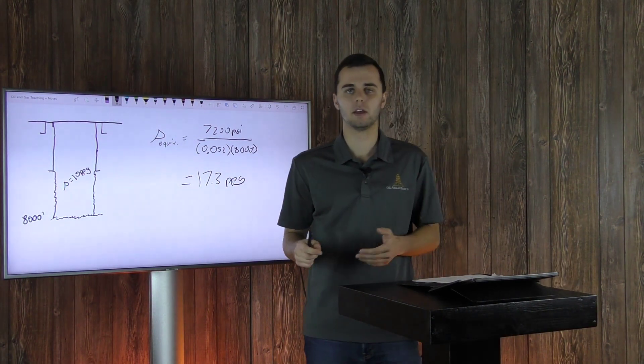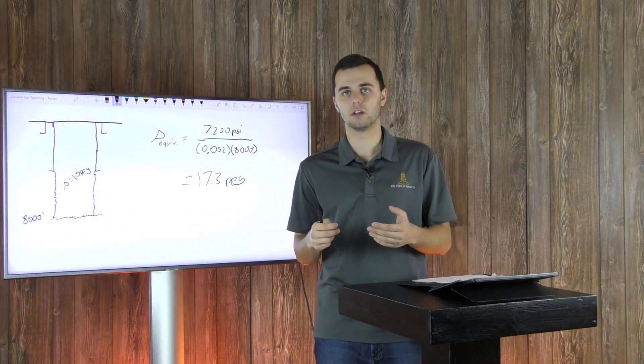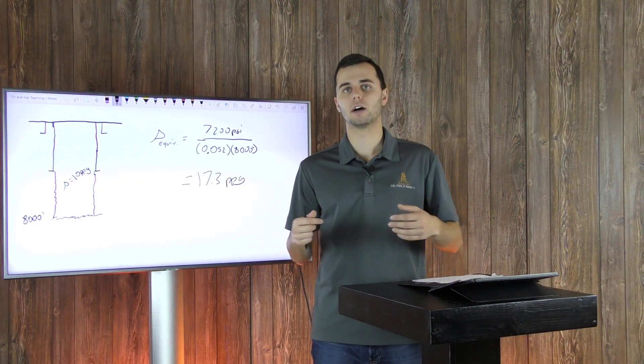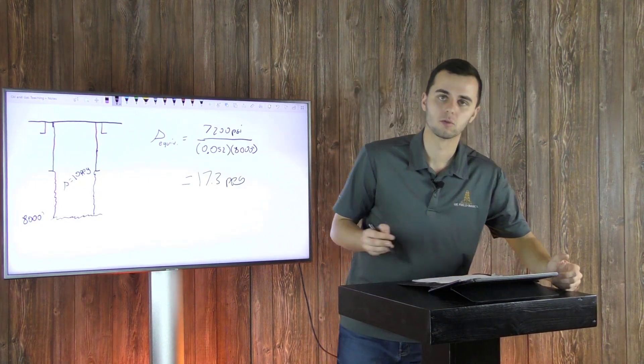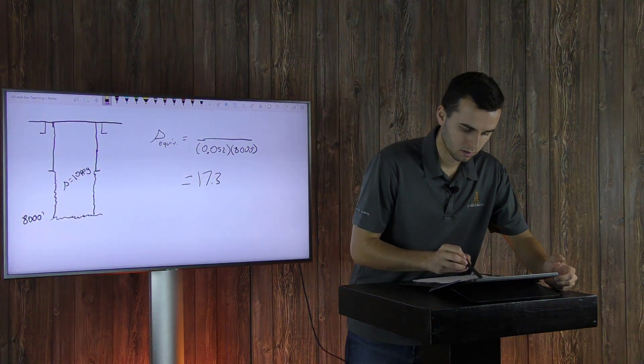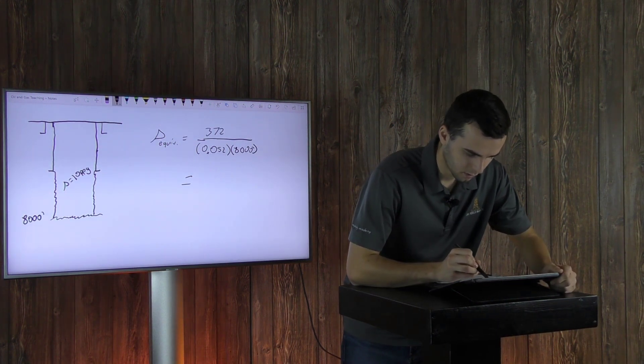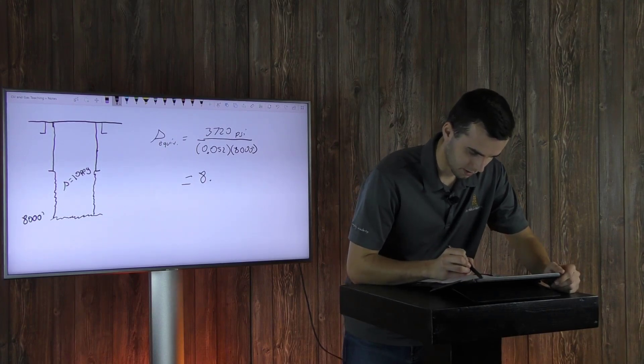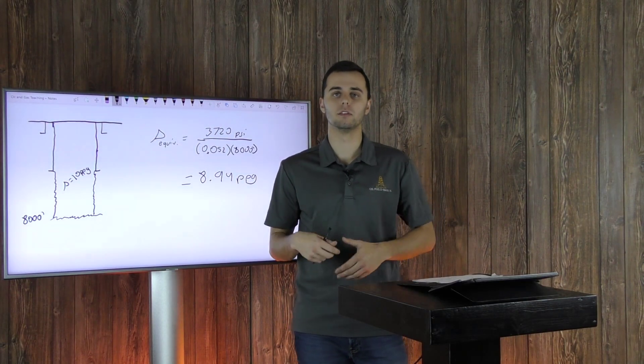This is your max mud weight right here. And now we have to figure out using our formation pressure that we calculated using our normal pressure gradient is your minimum mud weight in order to not have a kick influx into your wellbore. And so we're going to be doing this kind of the same procedure here. Instead of the 7,200 psi, we'll simply put the pressure that we got before of 3,720. And this gives us a mud weight of 8.94 ppg.